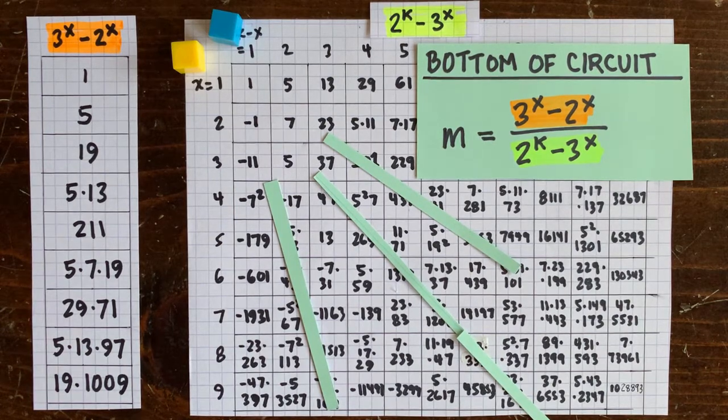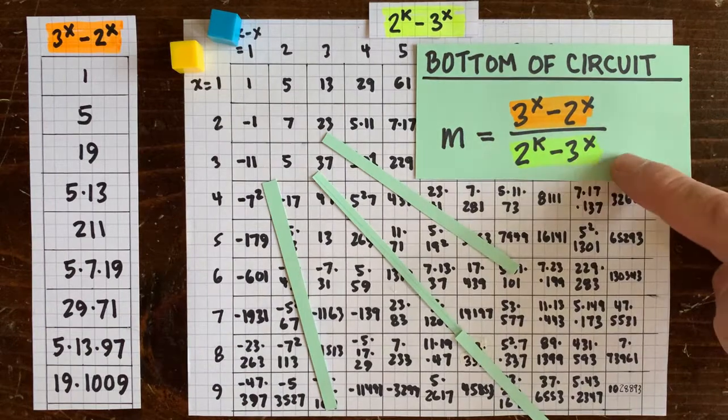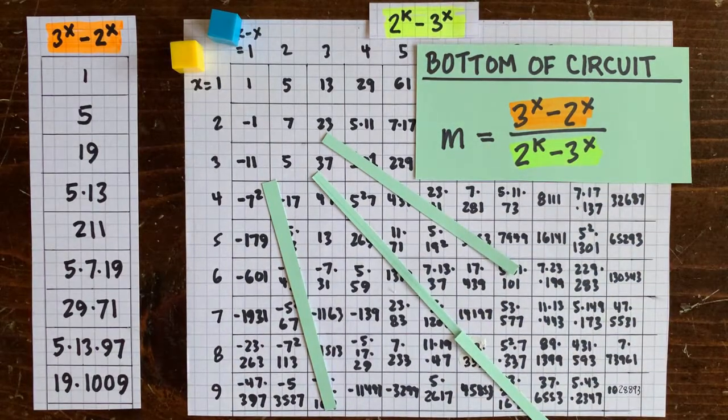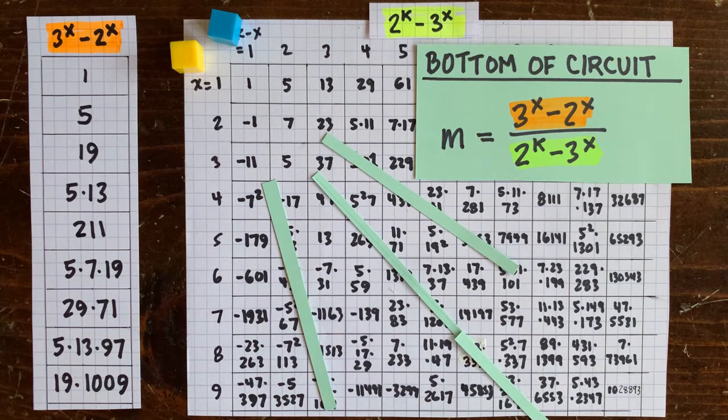Welcome back. We're looking at the divisibility between 3 to the x minus 2 to the x and 2 to the k minus 3 to the x, trying to prove it's never going to be an integer, which would prove there's never going to be a circuit loop for the 3n plus 1 problem.